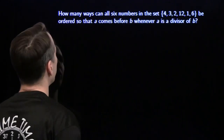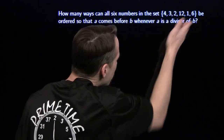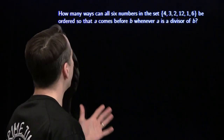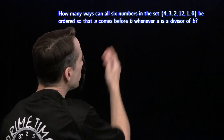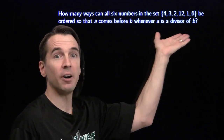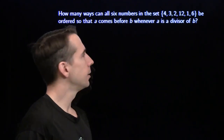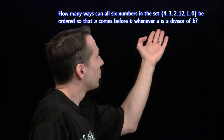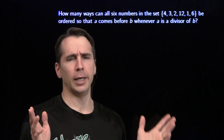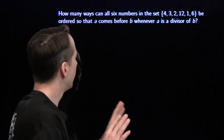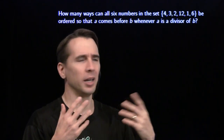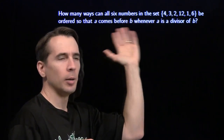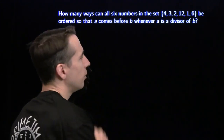Let's see how it works on this problem. We have a set with six numbers, and we want to count the number of ways we can order the six numbers in this set so that A comes before B whenever A is a divisor of B. We must be using the word 'before' a little loosely here because 12 is a divisor of 12, but 12 can't come before 12. Let's go ahead and try to build one of these orderings.